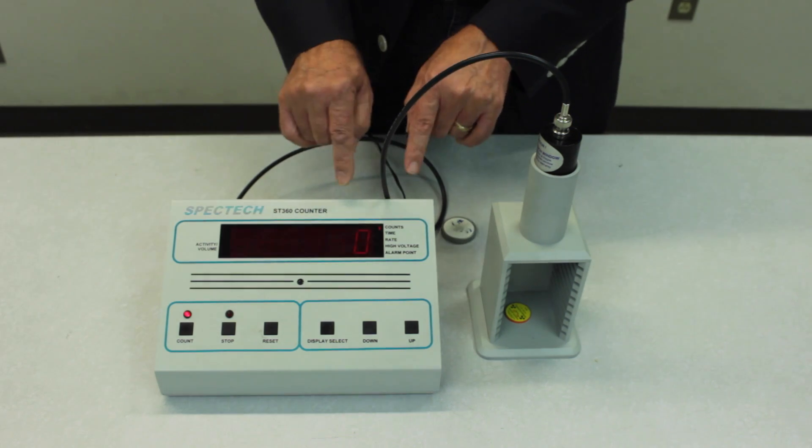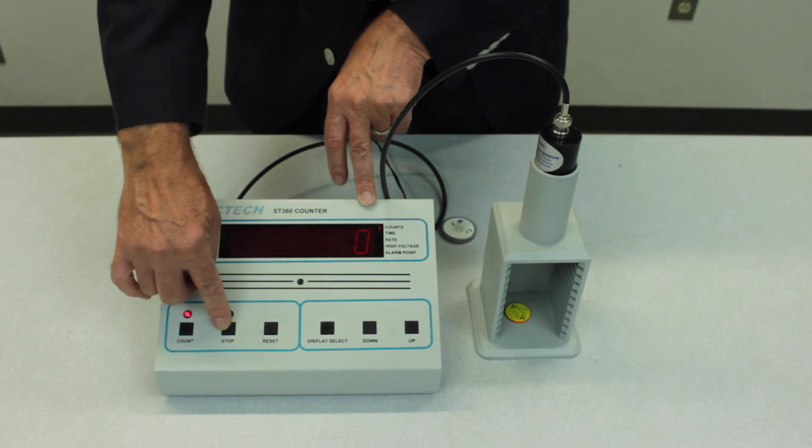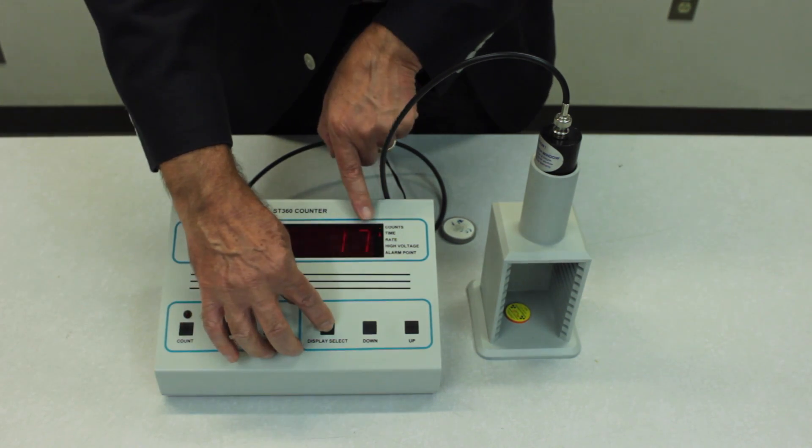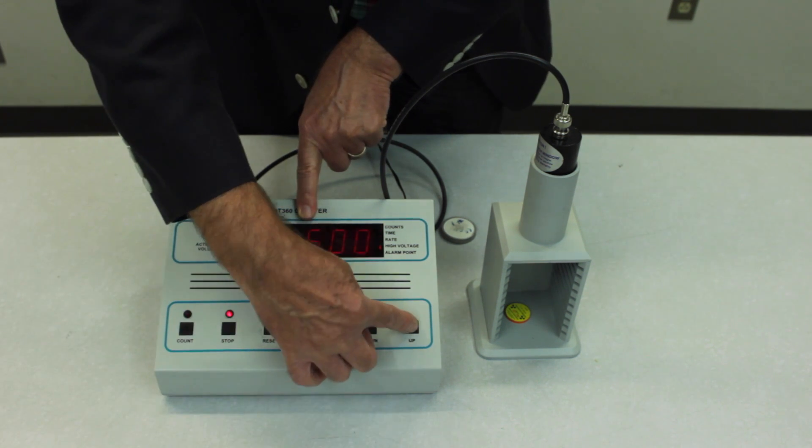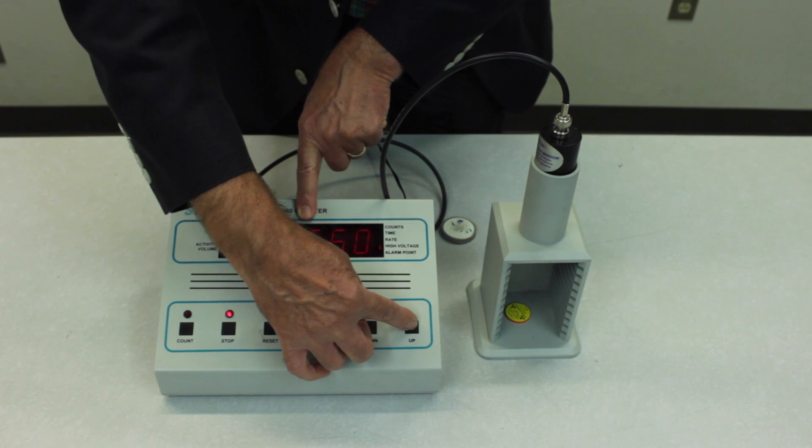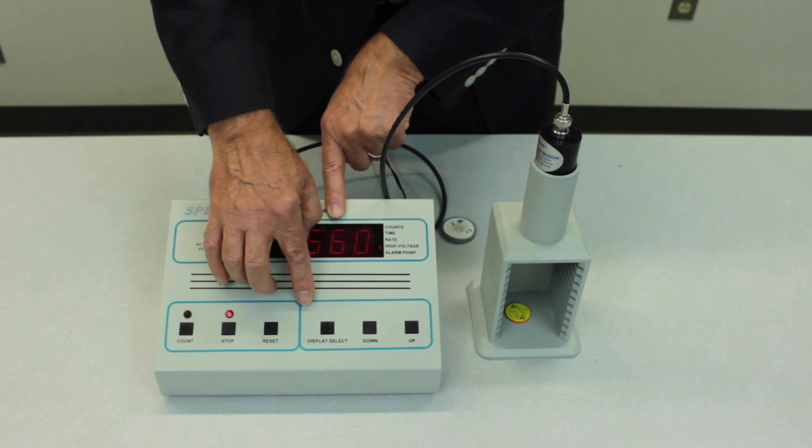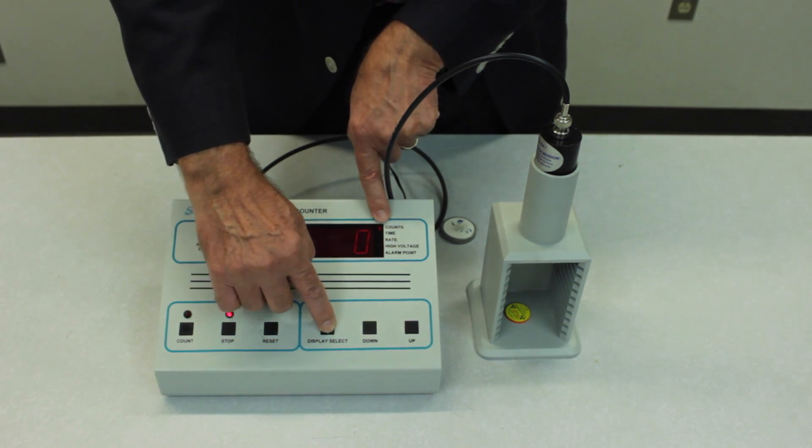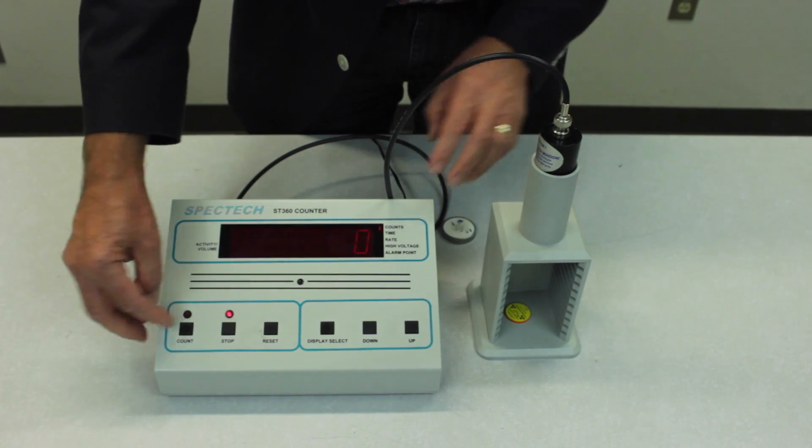So you might want to start around six hundred. And if you're not seeing anything obviously just stop this and declare that to be zero. Set the high voltage again. Let's go up to maybe six hundred and sixty. And we'll see if that's enough to get the counter going. So pressing the display select button again. Back to the count function. And we'll start the count again.